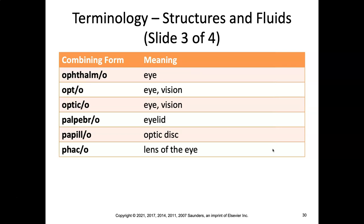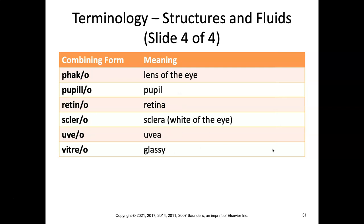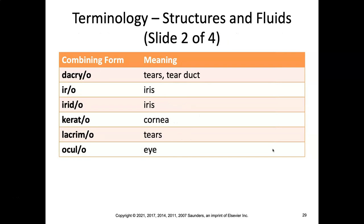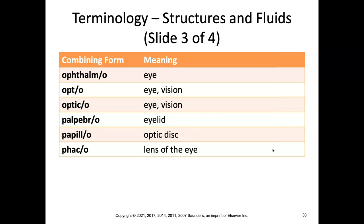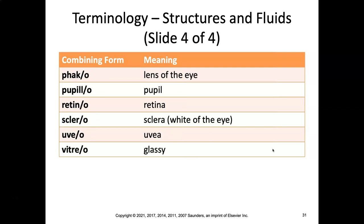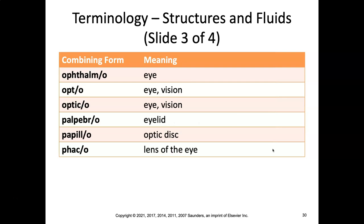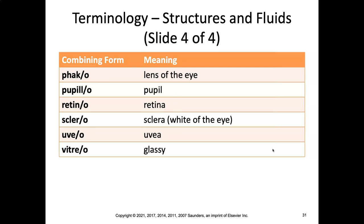Continuing with combining forms: ophthalmo, opto, and optico — all for eye — but watch out because opto and optico can also mean vision. Palpebro means eyelid, but so did blepharo, so that's another one to watch. Papillo is optic disc; phaco is lens of the eye. Note that papillo and pupillo differ by only one letter but mean totally different things. Also notice phaco with a C was also lens of the eye. Then retino, sclero, uveo, and vitreo.